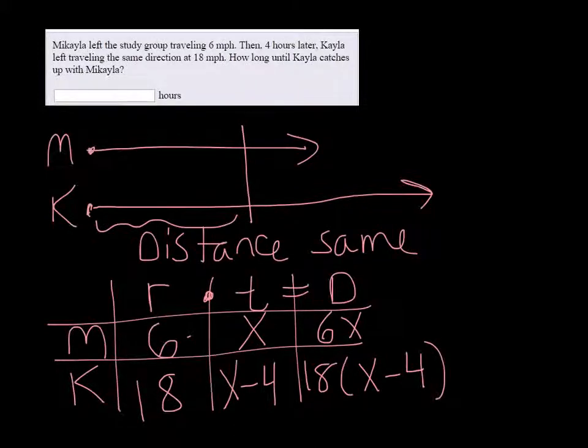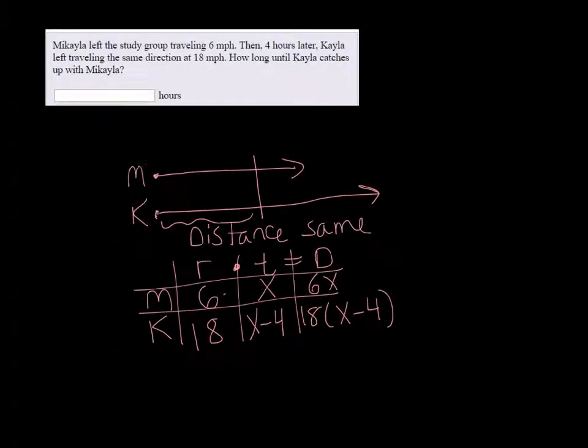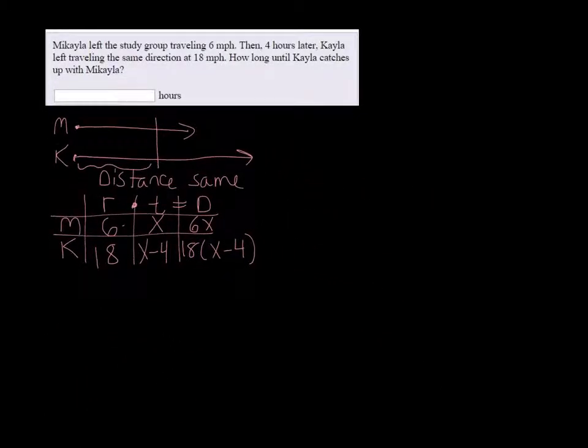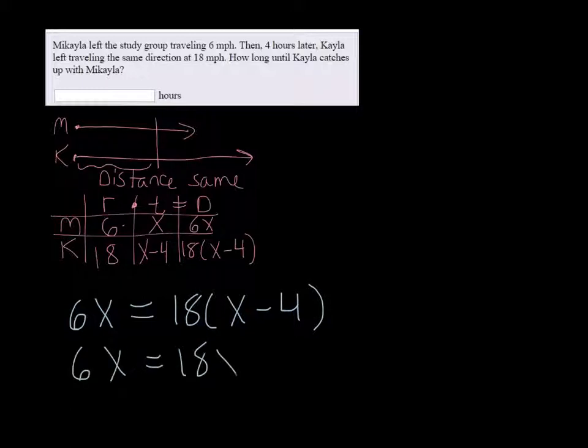Since we're talking about the same distance, we're just going to set the two distances equal to each other and solve. So that's 6x equals 18x minus 72.